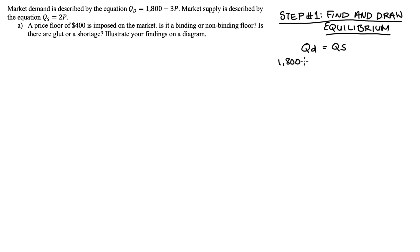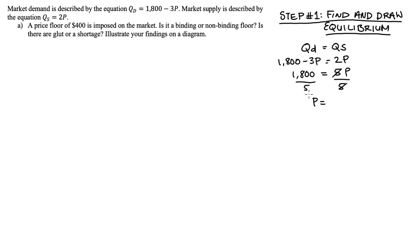Setting Qd equal to Qs: 1,800 − 3p = 2p. Adding 3p to both sides gives 1,800 = 5p. Dividing both sides by 5, we get 1,800 ÷ 5 = 360. That's our equilibrium price p* = 360. I can then substitute that price of 360 into either the demand or supply function — it doesn't matter which, they're equal at this price.